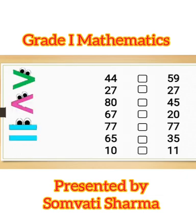Now here some more examples for your practice. See, here 44, 59. Which number is bigger? 59 is bigger. Yes. So we will speak, 44 is less than 59. Next one, 27 is equal to 27. Next, 80. Here you can see 80, bigger number. 45, small. So 80 is greater than 45.